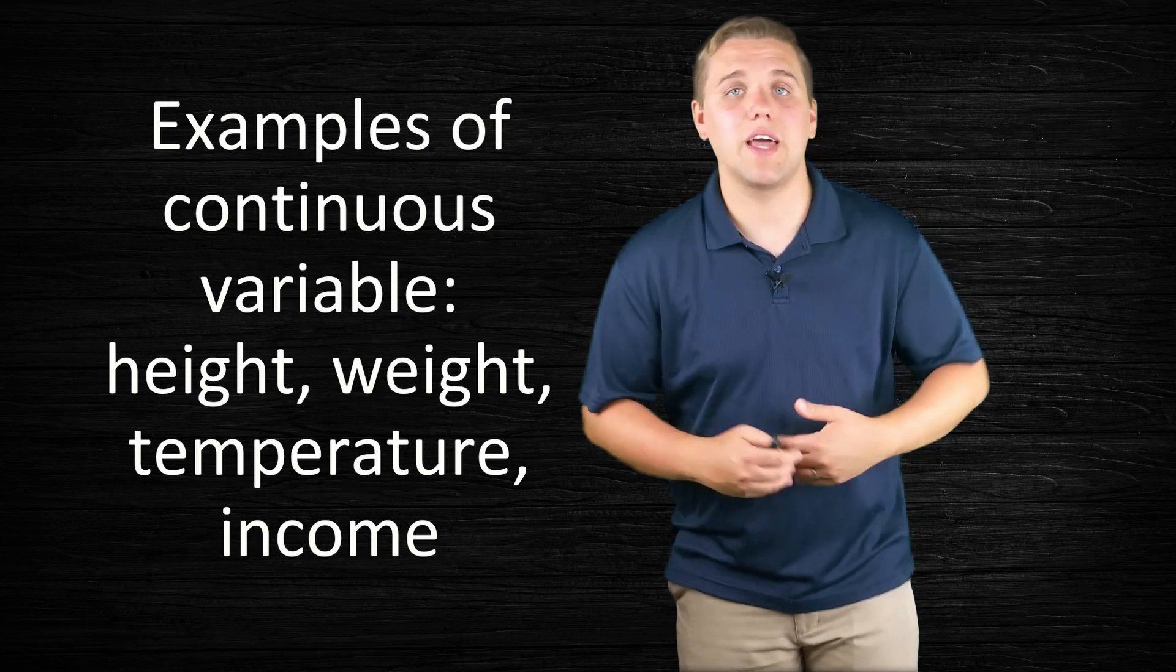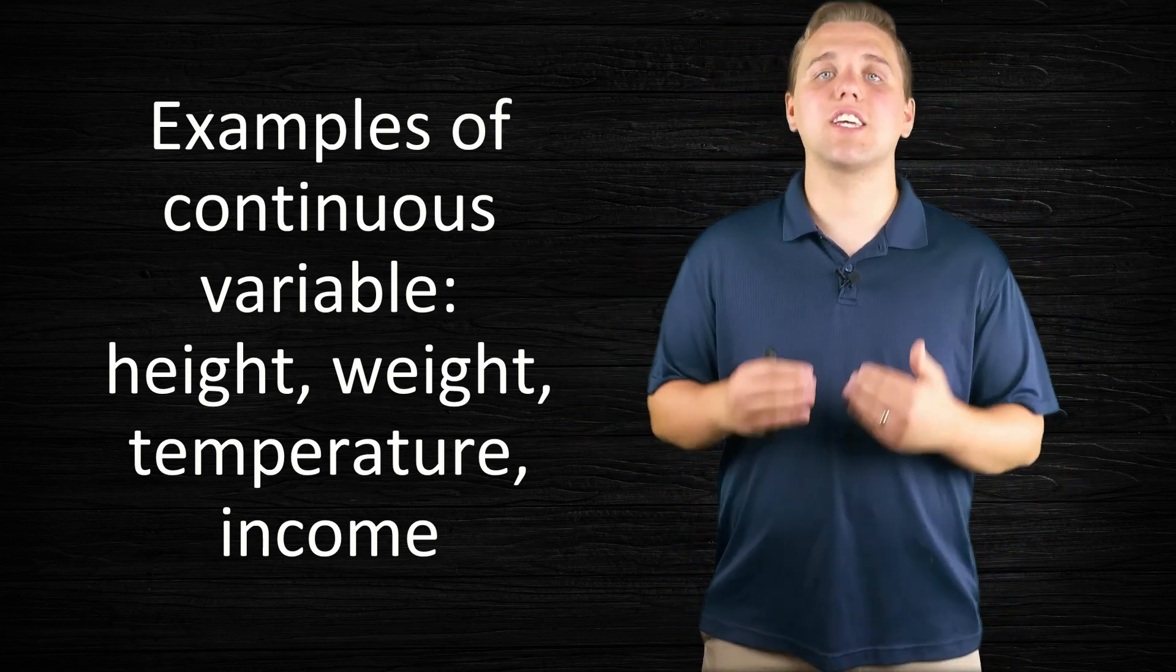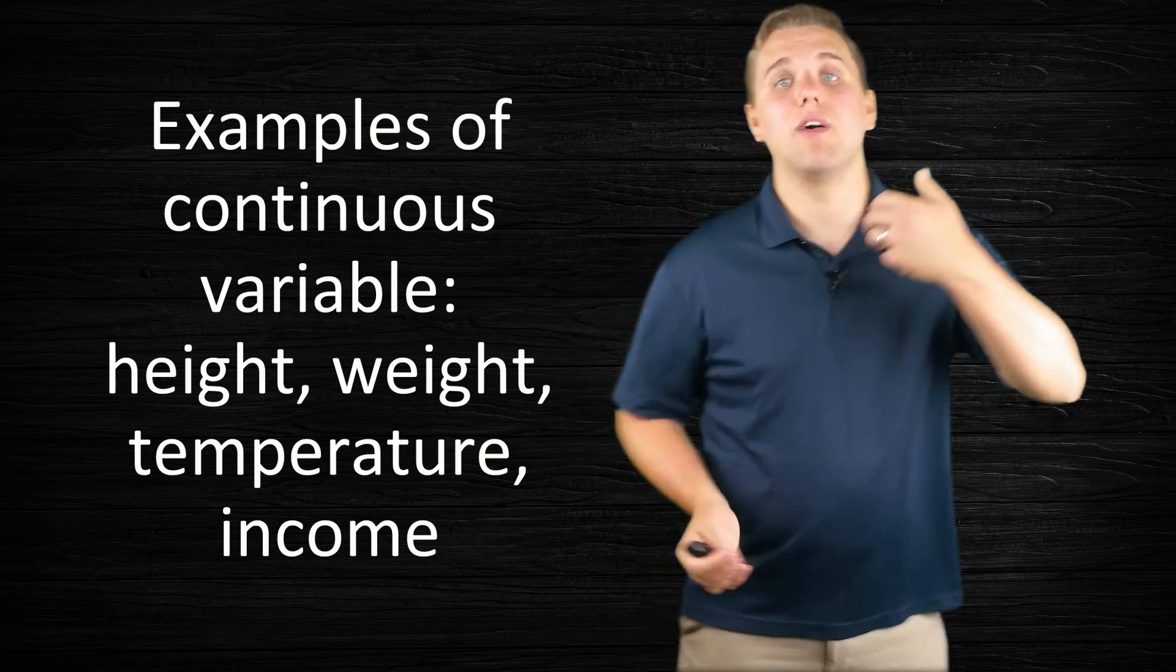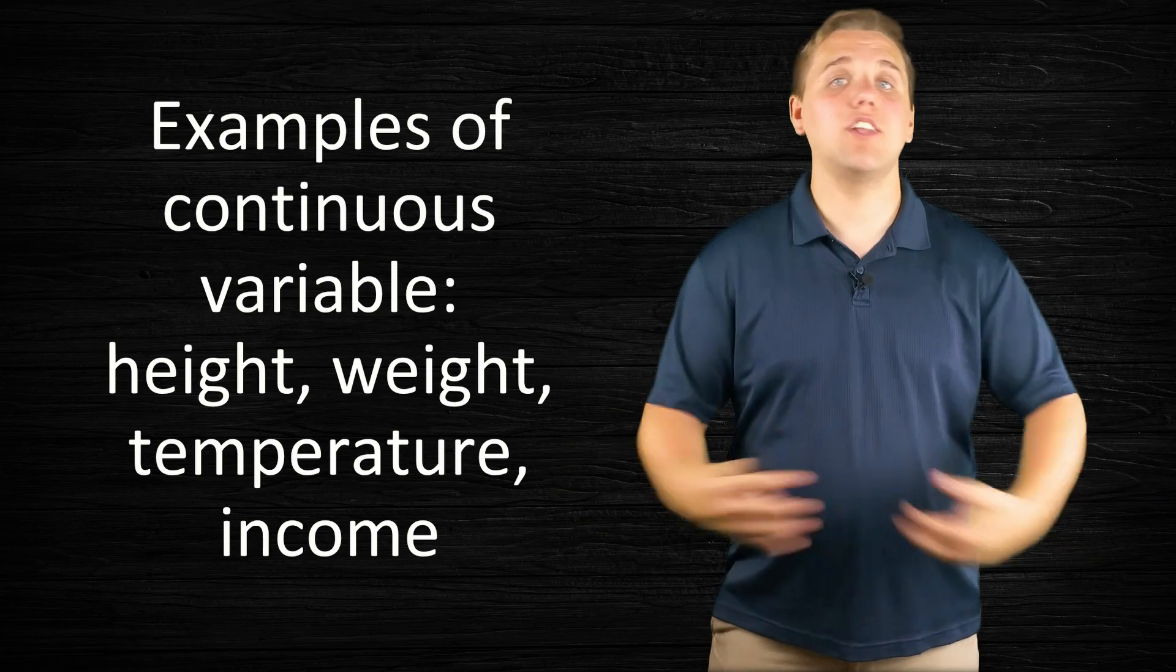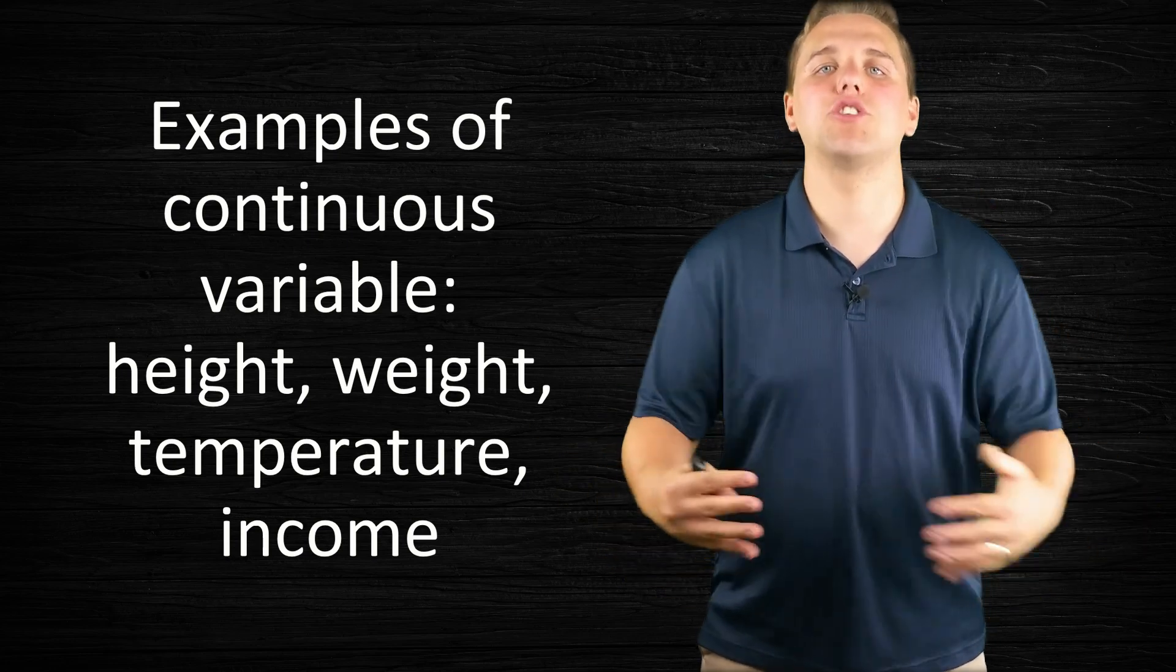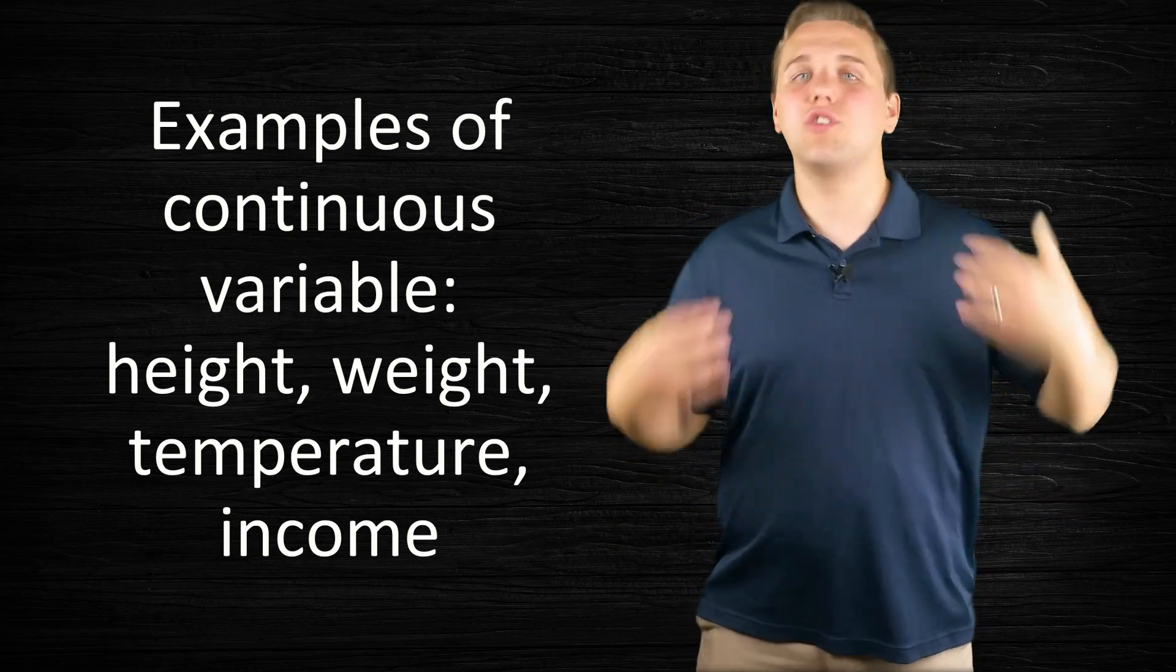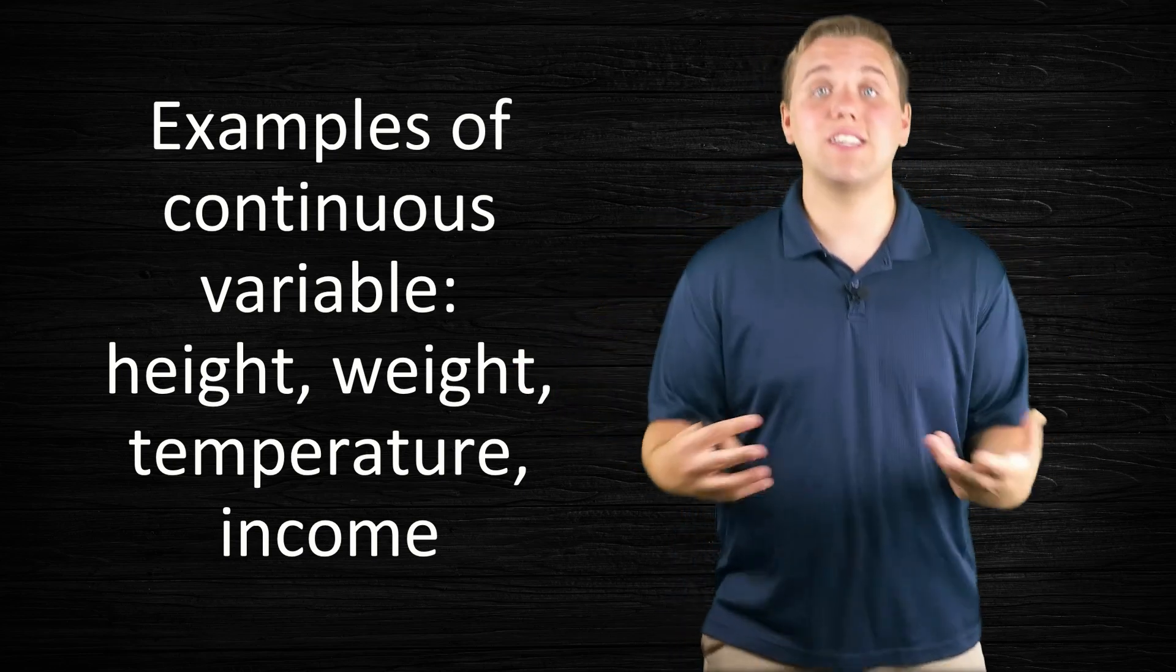Examples of continuous variables would be something like height or weight or temperature or income. These things could be measured with rulers, and on top of that I can be as precise as I want to be. For example, height I can go to five, ten, twenty, thirty decimal places if I wanted to. I can get very very specific depending on how I measure my sample. Weight I'll probably only go to two decimal places, but I can be more specific if I need to be. Temperature I could be as precise as I need to be.